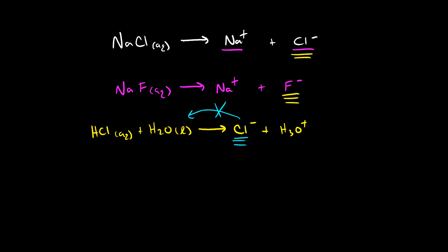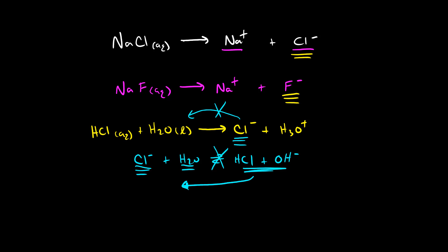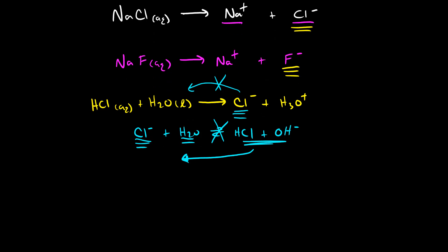Chloride does not undergo a base dissociation reaction to produce hydrochloric acid, because hydrochloric acid is a strong acid and the products would be a strong acid and a strong base — they would completely revert back to reactants. So this reaction does not happen; chloride is not able to serve as a base and react with water. Fluoride, however, is.